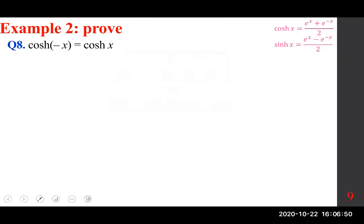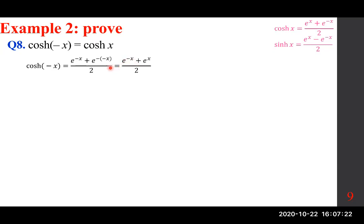Let's prove that cosh is an even function: cosh of negative x equals cosh x. We go with what we know — replace x with negative x in the definition. Cosh of negative x becomes e to the power of negative x plus e to the power of x, over two, which is identical to cosh x. Therefore cosh is even.